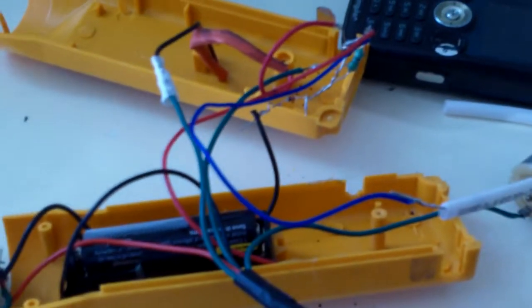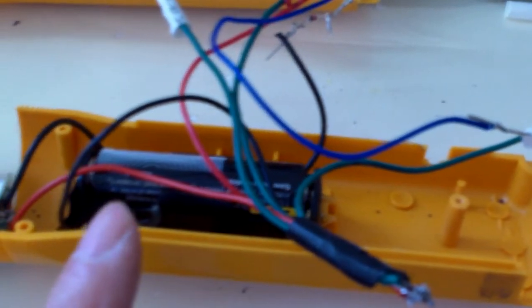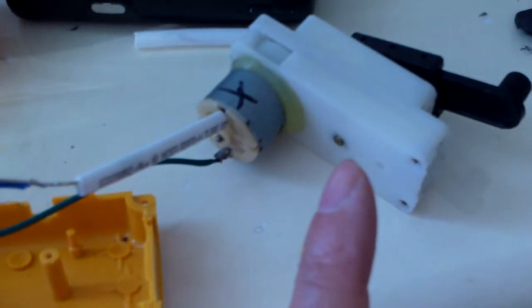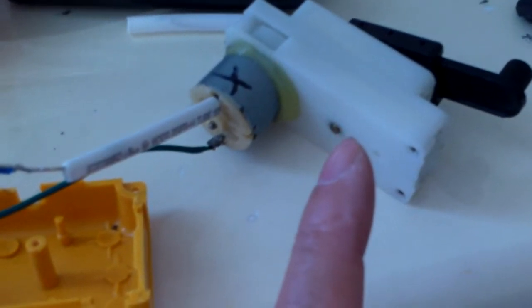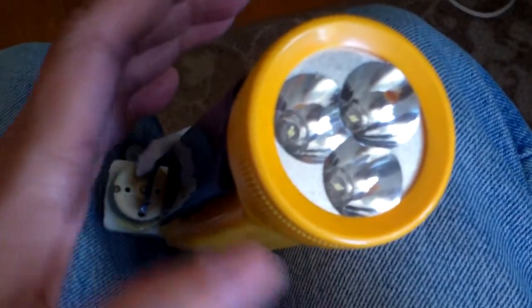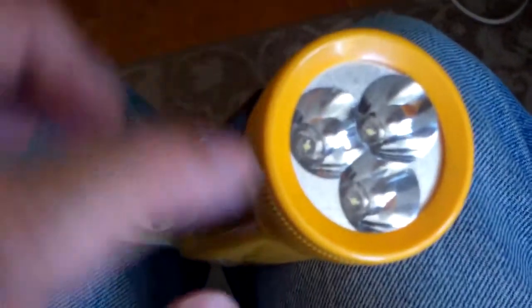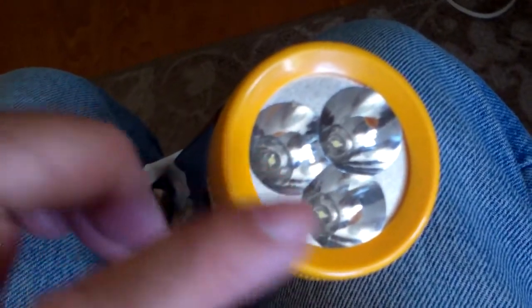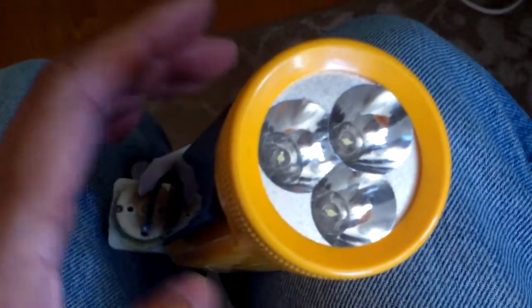The beauty of this flashlight is if there's no solar power I can hand crank to charge the AA battery. And I don't have to crank it fast because this outputs more than six volts.